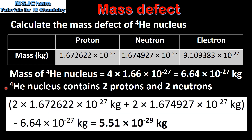A helium-4 nucleus contains two protons and two neutrons. To find the mass defect we multiply the mass of a proton by 2 and add that to 2 times the mass of a neutron, then subtract the mass of the helium-4 nucleus, which gives us a mass defect of 5.51 × 10⁻²⁹ kg.